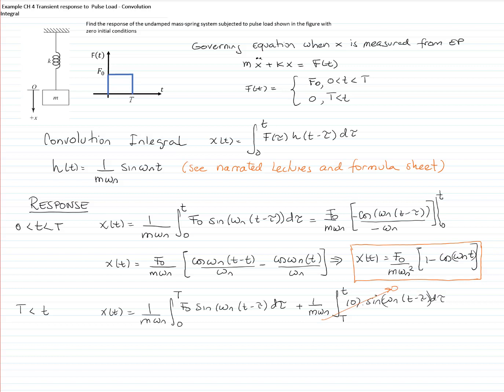Now let's evaluate that integral part with different limits of integration. So we have that is the same result, negative cosine omega n times t minus tau divided by negative omega n, and the limit of integration is 0 to capital T.